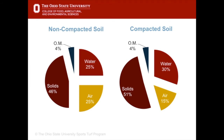Normally an uncompacted soil will have roughly 25 percent air pores, 25 percent water, and 45 to 50 percent soil solids. A compacted soil will result in a significant decrease in the amount of air pores, as shown in this figure comparing uncompacted and compacted soils.